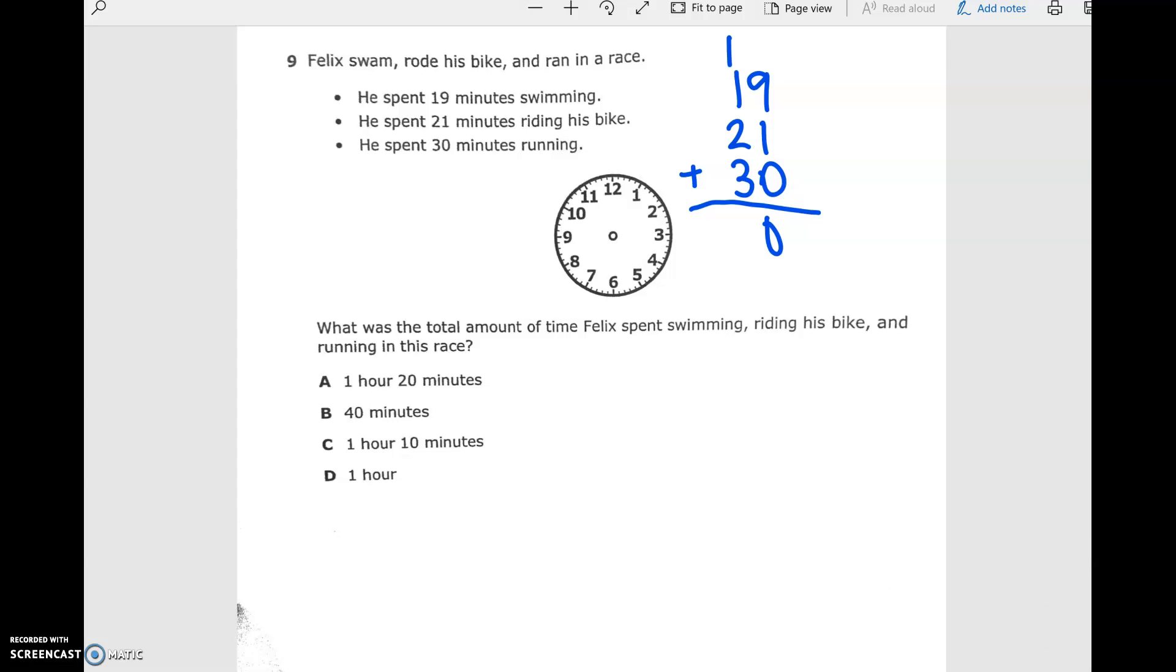Regroup a 10. Put it over here. 2, 4, 5, 6, 7. So, he did 70 minutes. Is that an option? Of course not, because that's not how time works, right? But we know that 1 hour is how many minutes? 60. You're right. 2 hours. Who remembers that? Say it out loud. This is like Dora. 120.